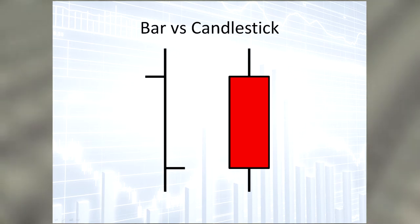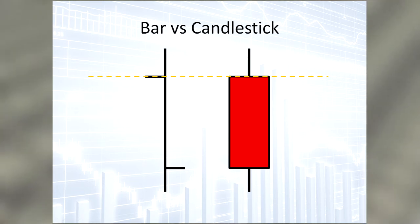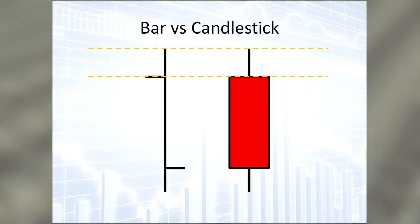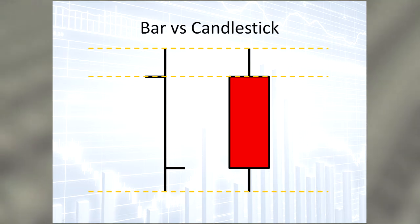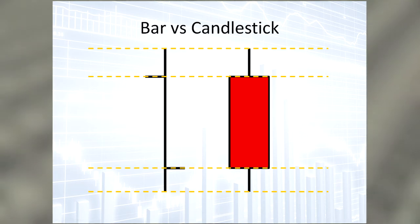Here we can compare the similarities between the bar from a bar chart and the candle from a candlestick chart. Opening price right over here — left dash on the bar and top of the candle. Then the stock price rose to the tip of the wick before dropping to the low, or tip of the bottom wick. Then as buyers came back in or shorts started cashing out, the price rose again to the closing right over here — the right dash on the bar or the lower end of the candle.